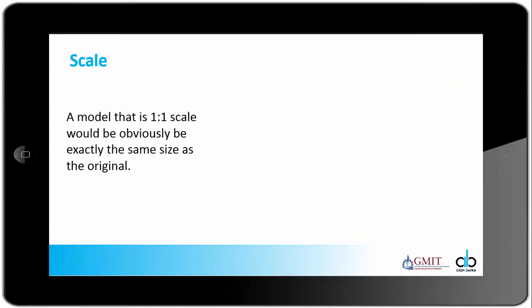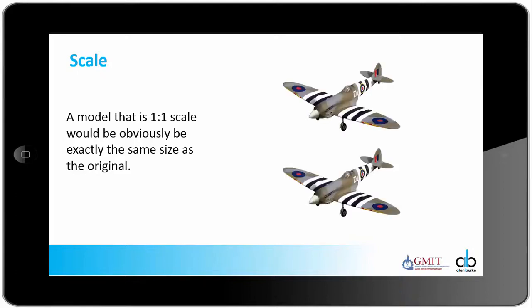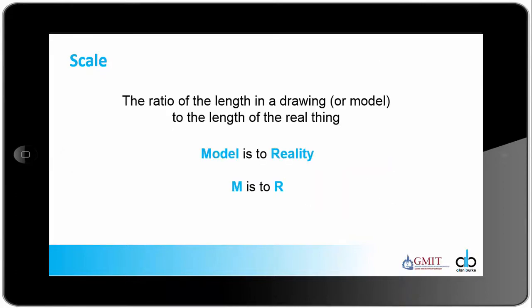A model that is 1 is to 1 scale would obviously be exactly the same size as its original. Put simply, the ratio of the length in a drawing or model to the length of the real thing is what is meant by scale. An easier way to remember that is model is to reality, or M is to R.